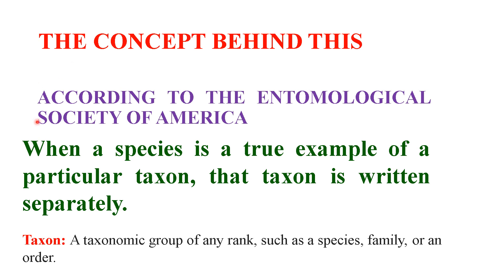Let me explain the concept behind this. According to the Entomological Society of America, when a species is a true example of a particular taxon, that taxon name is written separately. A taxon is nothing but a taxonomic group of any rank, such as species, family, or an order. For example, Hymenoptera is an order — we can call it a taxon.